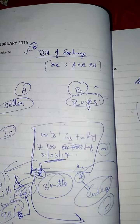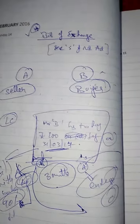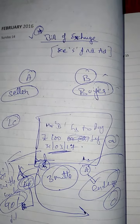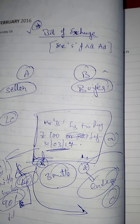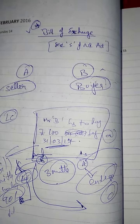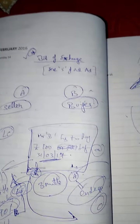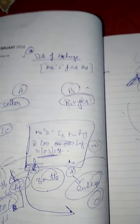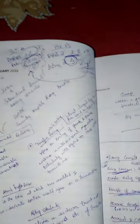Bill of exchange is a bill made by the seller, which is accepted by the buyer, to make the payment of a specified amount on a specified date or after a specified period of time. Bill of exchange is defined under Section 5 of the Negotiable Instrument (NI) Act.